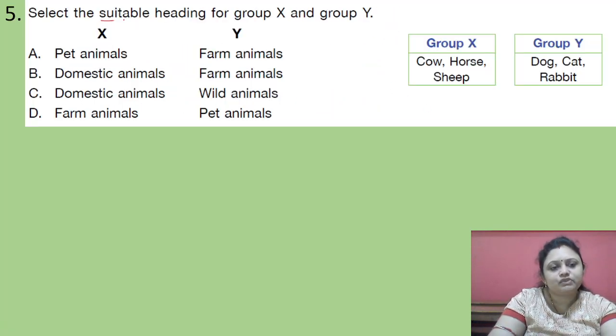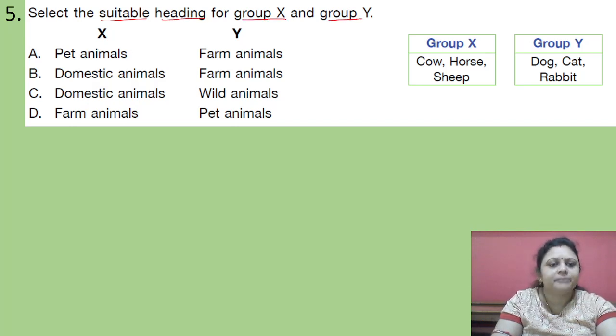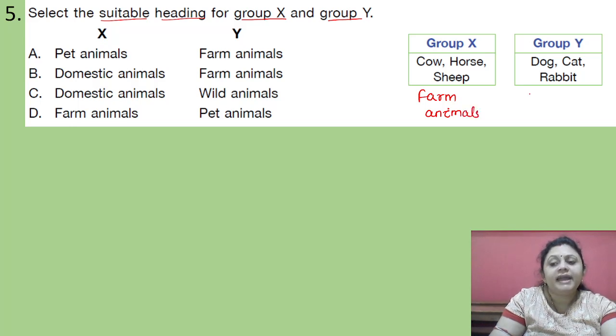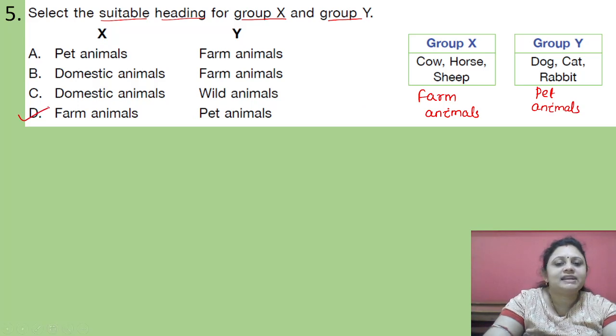Coming to the next question. Select the suitable heading for group X and group Y. Options are A. Pet animals, farm animals. B. Domestic animals, farm animals. C. Domestic animals, wild animals. D. Farm animals, pet animals. So group X that is cow, horse, sheep. Group Y that is dog, cat, rabbit. So here group X that is cow, horse, sheep. We can write here they are farm animals and dog, cat, rabbit. These are pet animals. So which one is the correct option? That is option D. Got it everyone?